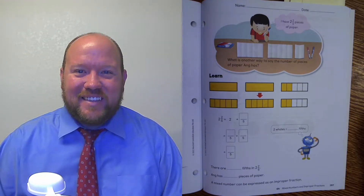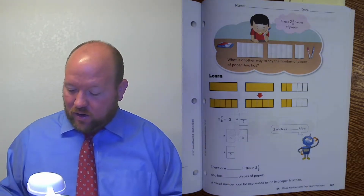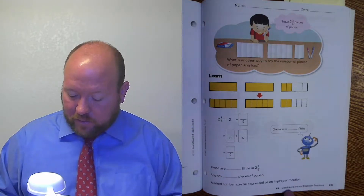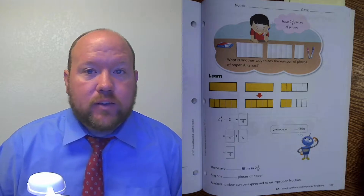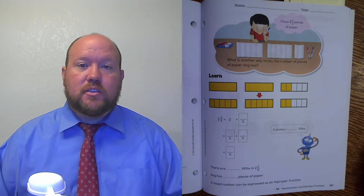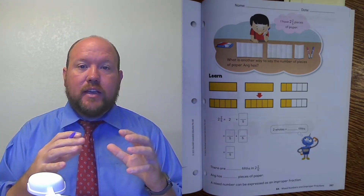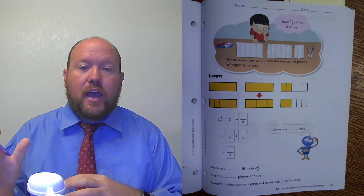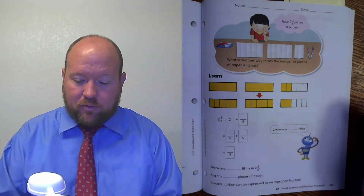Greetings and welcome to today's lesson. We are starting on page 267 and we are looking at mixed numbers and improper fractions. Yesterday we looked at improper fractions and how to turn improper fractions into mixed numbers. Today we're going to look at how to turn a mixed number into an improper fraction.